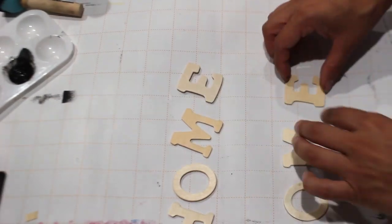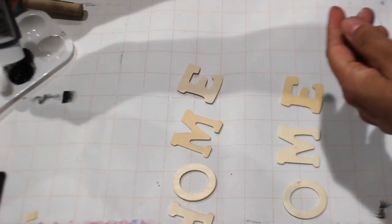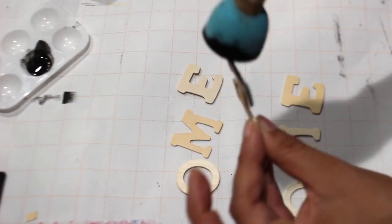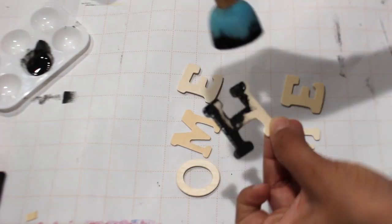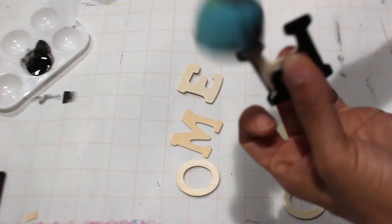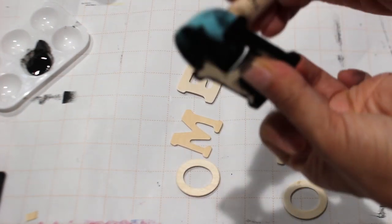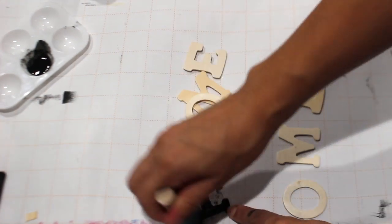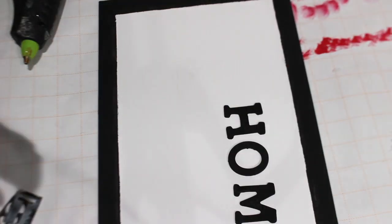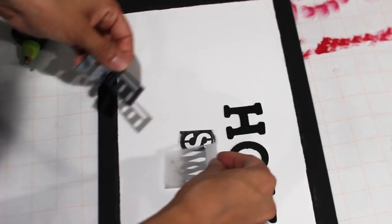While the sign is drying, I'm going to be adding home sweet home like I said with these Dollar Tree wooden letters. But what I'm doing is for the sweet part of the word, I'm going to be stenciling that in.